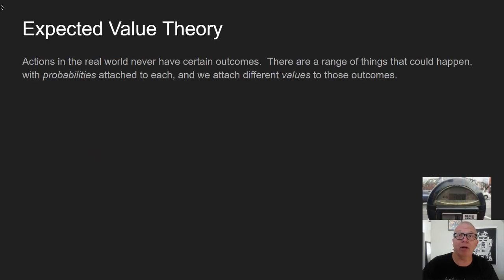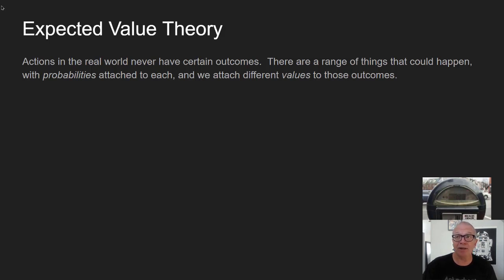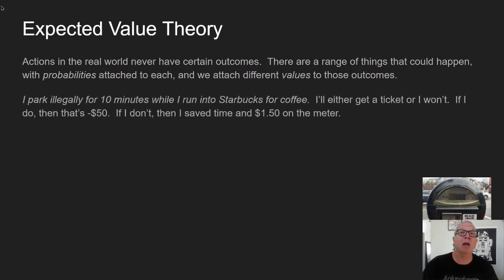Let's start talking about how expected value theory works. I'm going to give a justification in English, and ultimately we'll end up with a math theorem that lets us make decisions. When you make decisions in the real world, your actions never have certain outcomes — you're always making estimates about what's going to happen. There's a range of things that can happen, and we attach probabilities and values to each outcome. Take a simple case: imagine I'm considering whether to park illegally for 10 minutes in front of a Starbucks. I'll either get a ticket or I won't — two mutually exclusive outcomes.